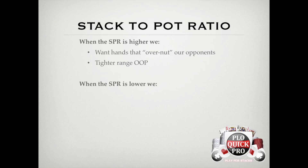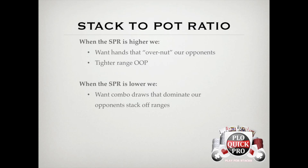Things change quite a bit when the SPR is in the 1–5 range, which tends to be 3-bet and 4-bet pots. In 3-bet pots, the action centers around combo draws, and the way to win stacks is by having pair-plus-draw hands that dominate other pair-plus-draw hands. Since we're going to be stacking off lighter and more often, the key is to choose hands that flop more equity more often — in other words, hands with a smoother equity distribution. We'll cover exactly what hands are ideal for lower SPR situations in lessons 4 and 5, the 3-betting and 4-betting sections.